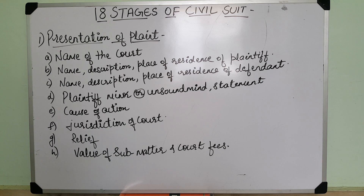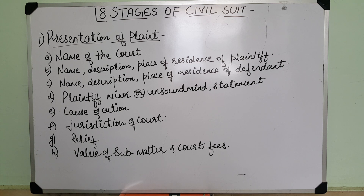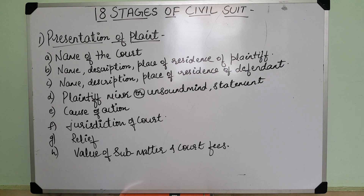The plaint shall contain the following particulars. The first one is name of the court. The second one is name, description and place of residence of plaintiff. The third one is name, description and place of residence of defendant. The fourth one is where the plaintiff is a minor or of unsound mind, a statement to that effect. The fifth one is facts constituting the cause of action and when it arose.